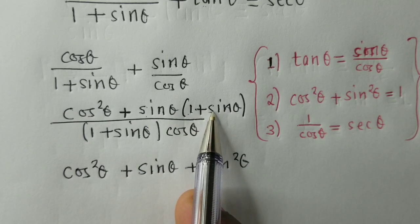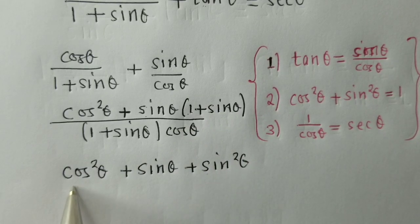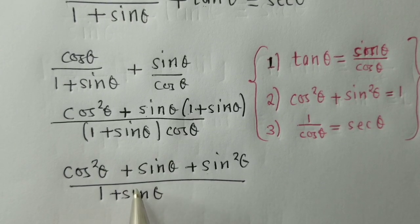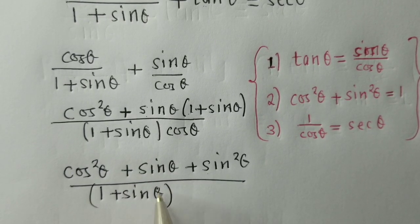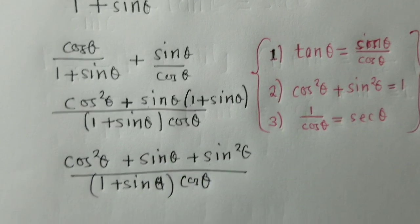Sin theta times sin theta here is sin theta squared, over 1 plus sin theta, cos theta.